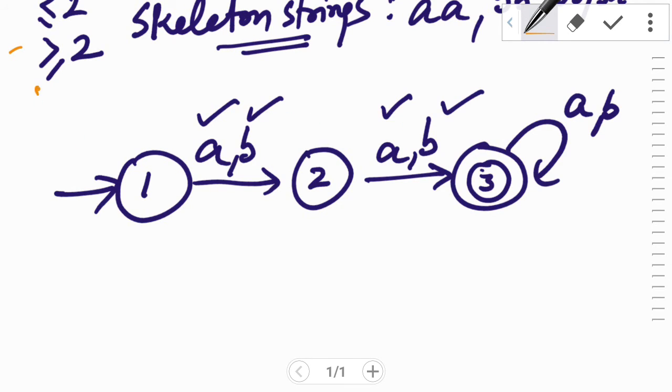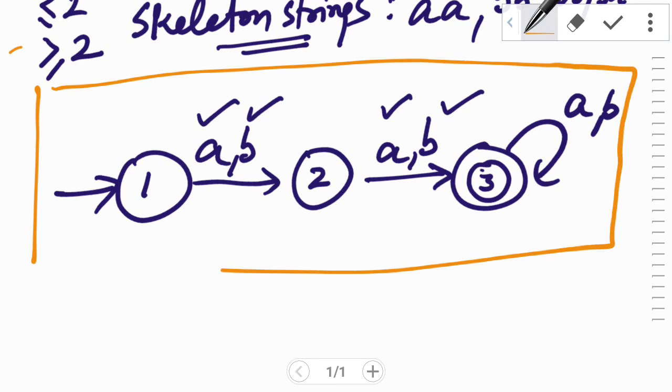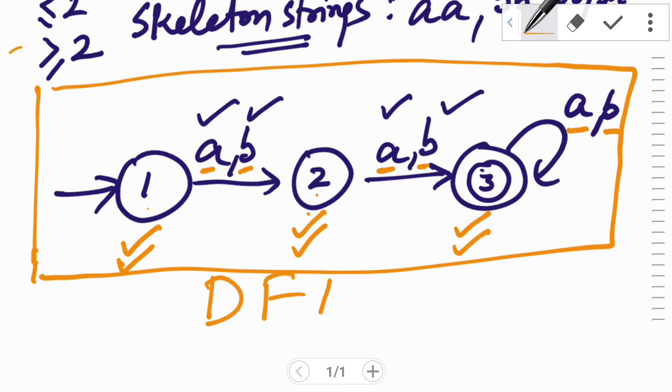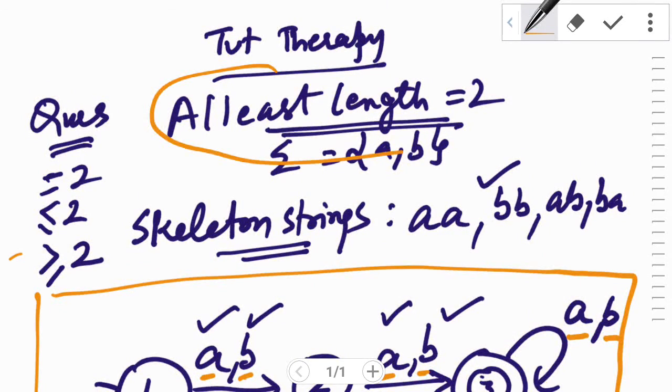Now again, look into this DFA very carefully. We have defined the input symbols to every state. Look at state 1, we have defined a and b to state 1, therefore we can proceed to state 2. We have defined input a and b to state 2, hence we should see for state 3 we have again defined input a and b on state 3. Since the inputs have been defined over all the 3 states, therefore we can call that this is a DFA which accepts all the strings of at least length 2.